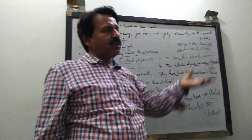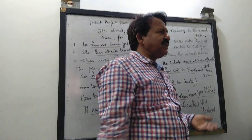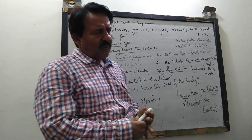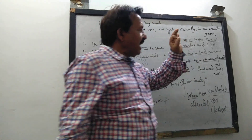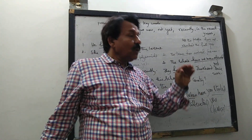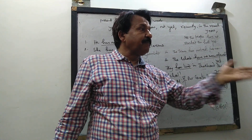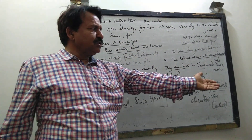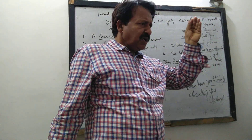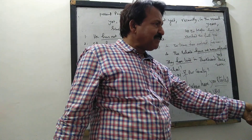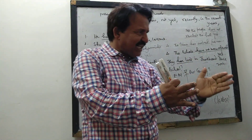Hi, and today we are going to discuss tenses — Present Perfect Tense. Kunal and Jayant, you asked me: what is Present Perfect Tense? An action which has just been completed in the present is a Present Perfect action. For example, Nandalal has just arrived, and he has also arrived — both these children have arrived just now. Their arrival has been completed, so this is a complete action.